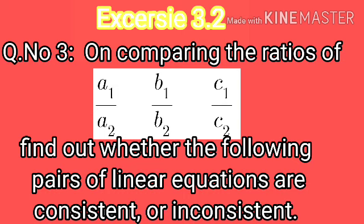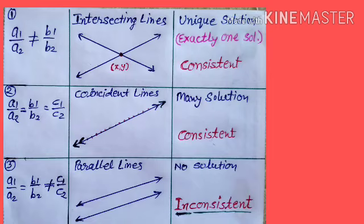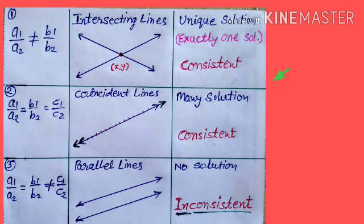Once again, we will see all three rules or conditions of solving the pair of linear equations in two variables. If a1 upon a2 is not equal to b1 upon b2, then the lines are intersecting lines and there is only a unique solution. Both lines are known as consistent.